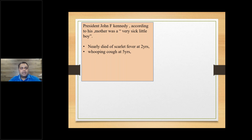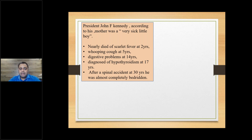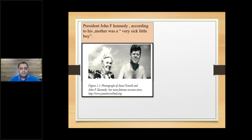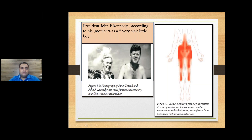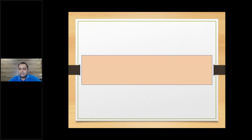A small history about President John F. Kennedy: according to his mother he was a very sick little boy — nearly died of scarlet fever at two years, whooping cough at five, digestive problems at 14, diagnosed with hyperthyroidism at 17, and at 30 had a spinal accident and was almost bedridden. This is a picture of Dr. Janet Travell, who treated him. Many doctors did not understand what the problem was, but she applied the principle of trigger points, found the pain map in his body, and treated him accordingly. When he became president, she was appointed as chief physician in the White House — the first time someone from outside was appointed by the president himself. That's how important trigger points and myofascial pain syndromes are.